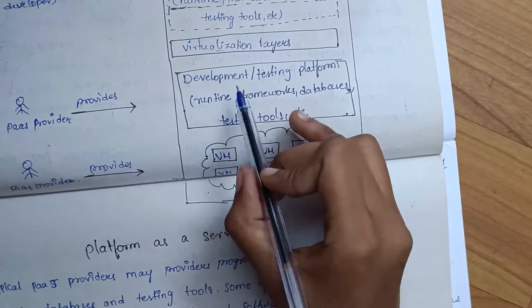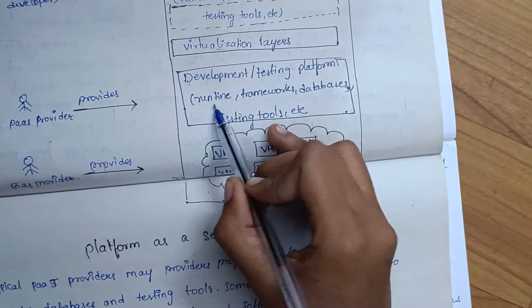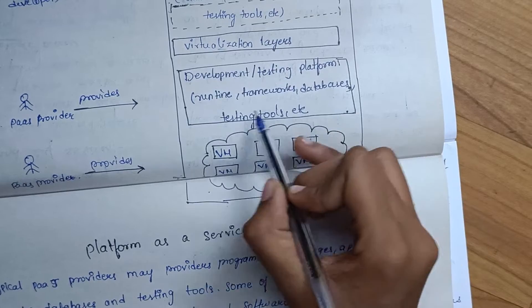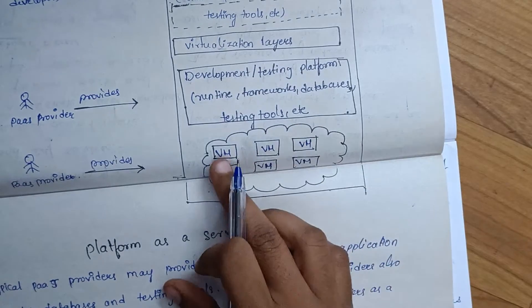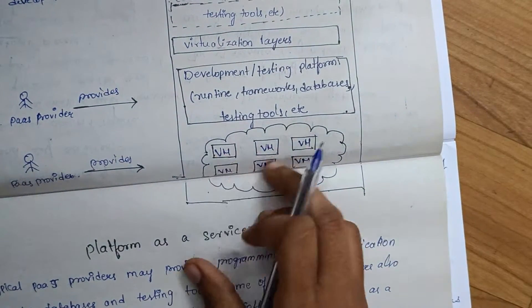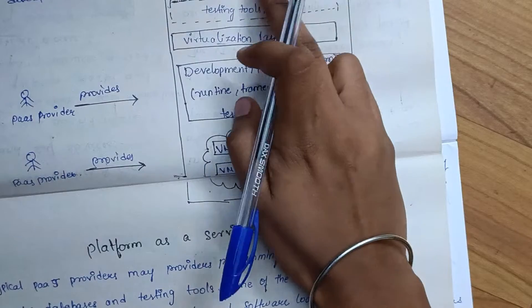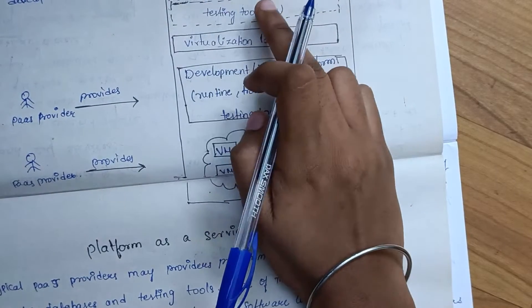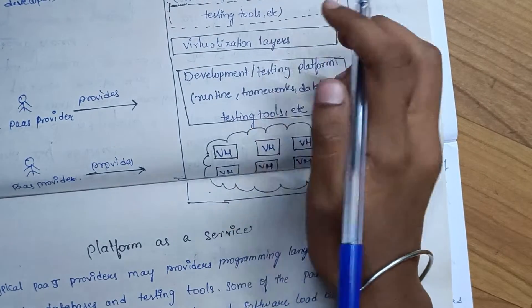So the development testing platform, runtime, framework, databases, testing tools, etc. Here we can use virtual machines, virtual development testing platform, runtime, frameworks, databases, and testing tools.